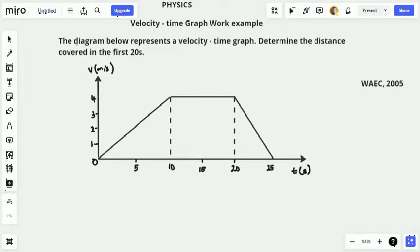The velocity-time graph problem states: the diagram below represents a velocity-time graph. Determine the distance covered in the first 20 seconds. Okay, let's do that.